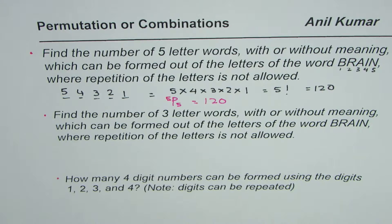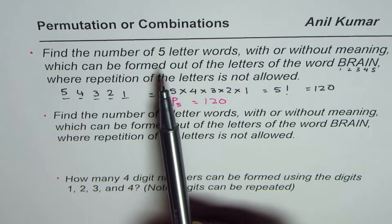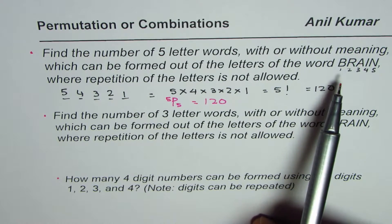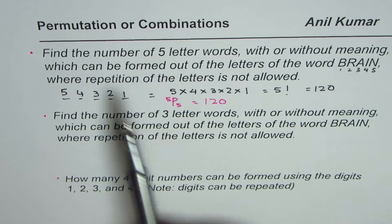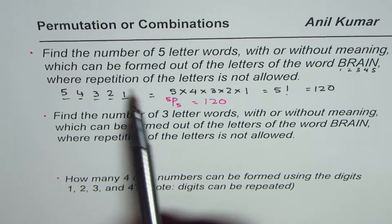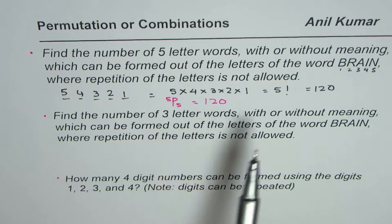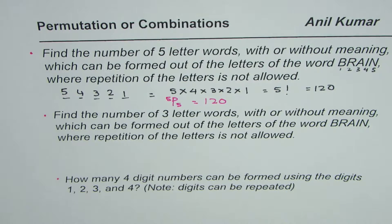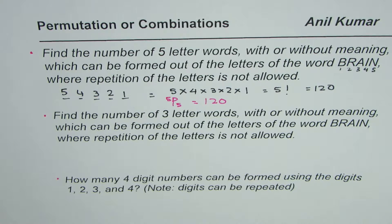That is how we apply the principle of permutation. In general, if you are taking all the letters and the order is important and repetition is not allowed, the formula will be nPn. That is illustrated by the first example. Now let's look into the second example.